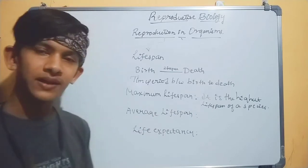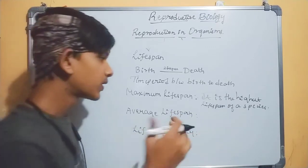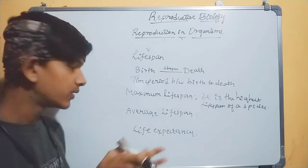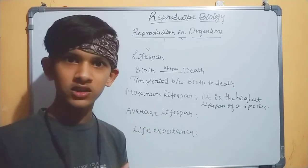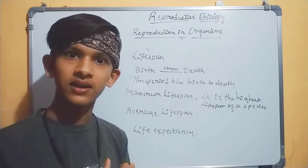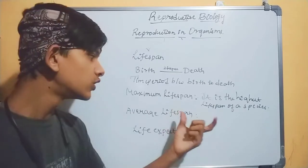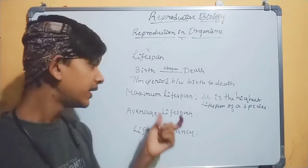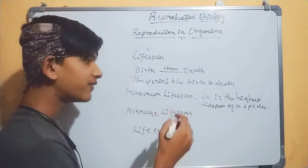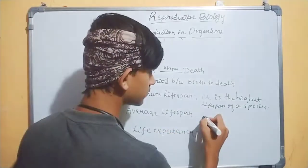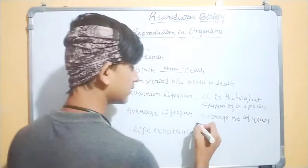Next, average life span is the average years which a population can live. Average life span varies from country to country. For example, Japan has more years, and in India there are almost 80 years. The definition: average number of years lived by a population.